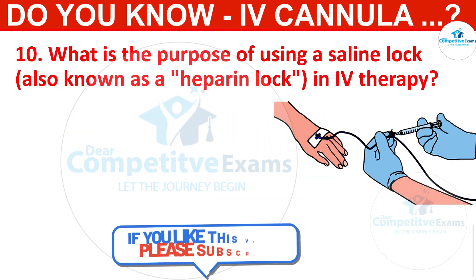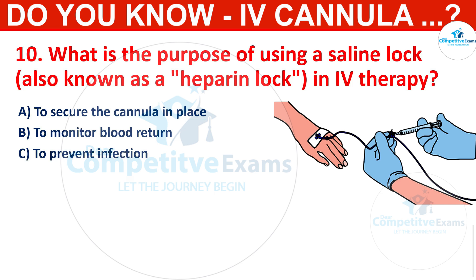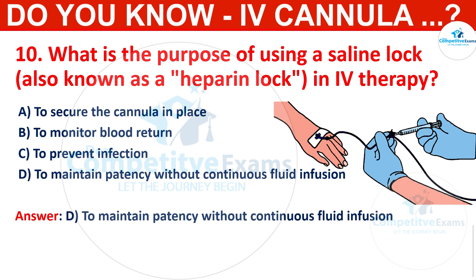Q10. What is the purpose of using a saline lock, also known as a heparin lock, in IV therapy? Options: to secure the cannula in place, to monitor blood return, to prevent infection, or to maintain patency without continuous fluid infusion. The correct answer is to maintain patency without continuous fluid infusion. A saline lock is used to keep the IV catheter open without the need for continuous fluid administration.